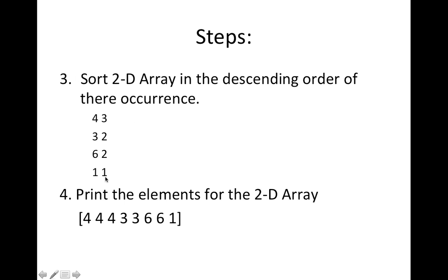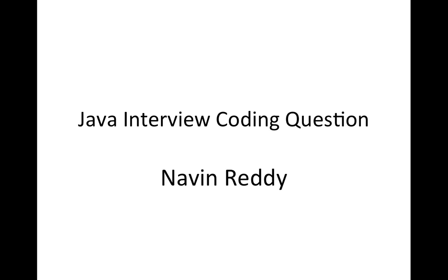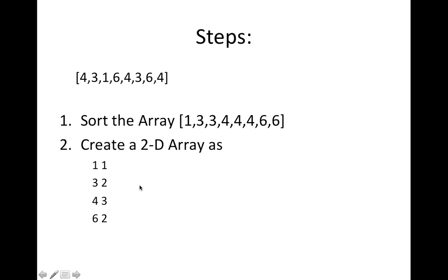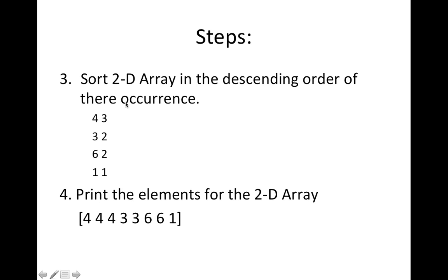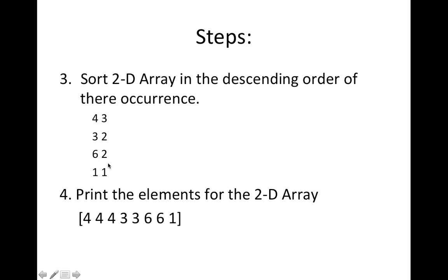Then we have 3 appearing 2 times, so it comes here. Then we have 6 appearing 2 times, and then we have 1 appearing once. Once you got all this in descending order of the frequency, we can print the elements.